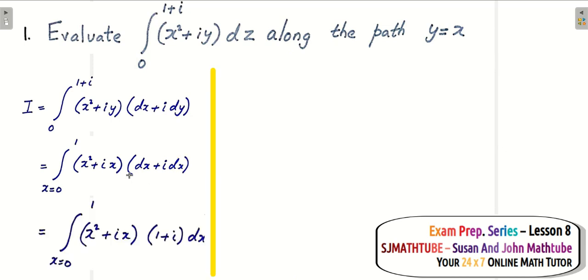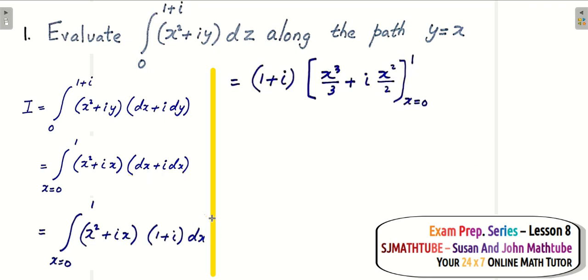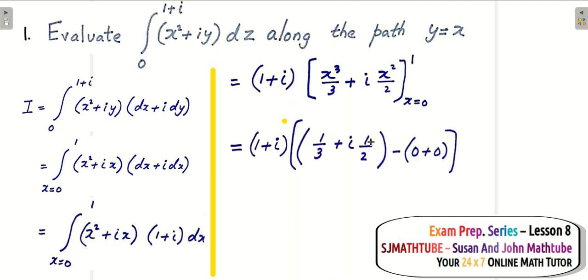We now have a common factor of (1+i) multiplied by dx, and since it's a complex constant it goes outside the integral. The integral of x² is x³/3, and the integral of x is x²/2. Substituting the upper limit minus the lower limit gives the answer. You can use a calculator to multiply the complex numbers if needed.